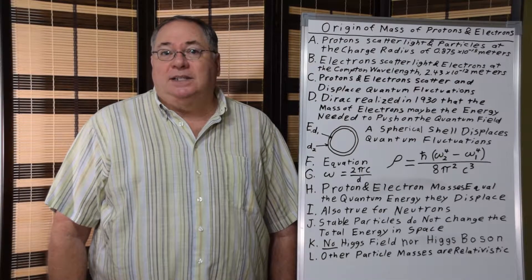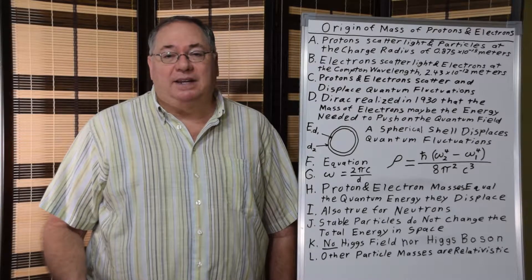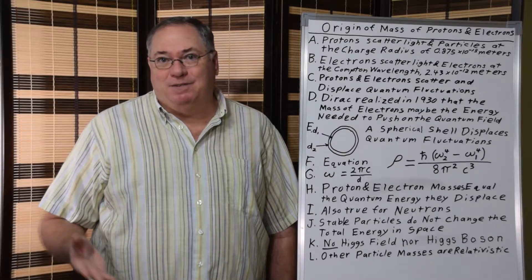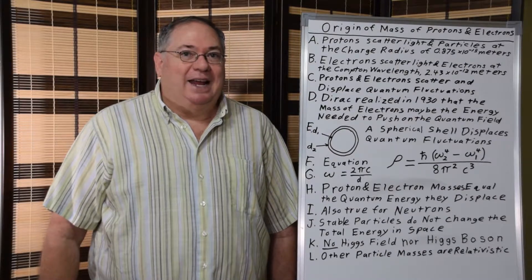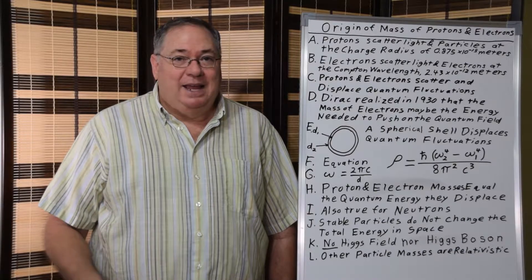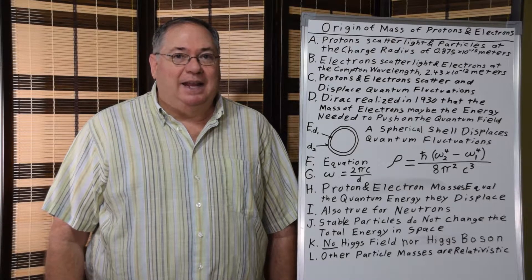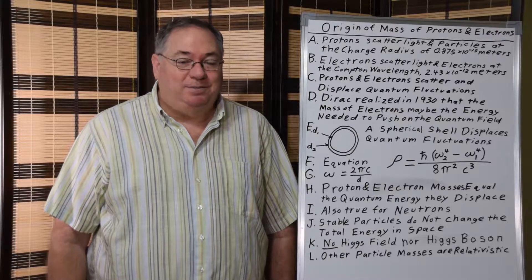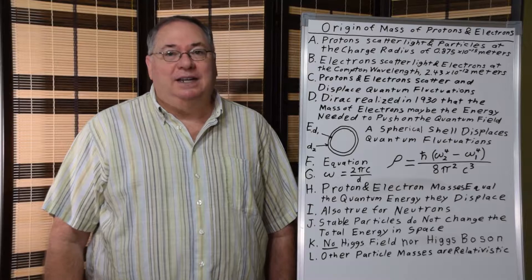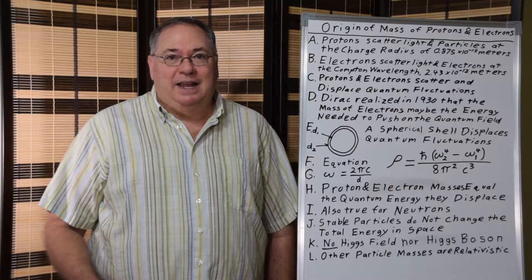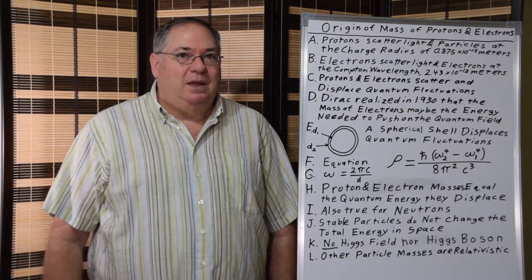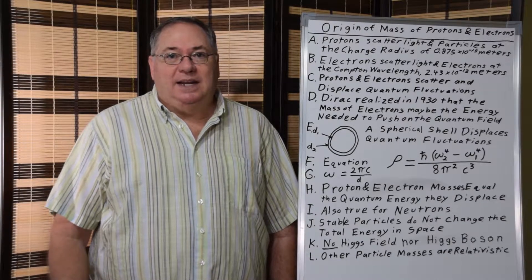And so in the 60s, a theory came about that there was a field that gives particles mass. Higgs was one of the people who came up with that idea, so it's called the Higgs field. And then there was a Higgs boson to go with the Higgs field, where the boson forms a field that gives the particles mass. And that's where things stand today.